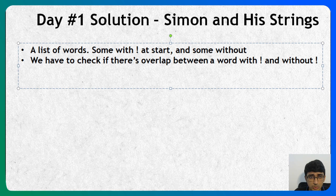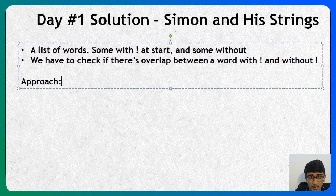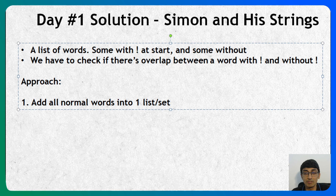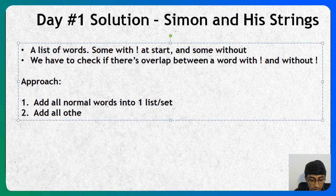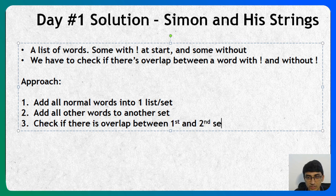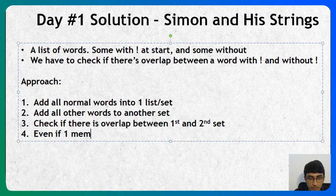The approach I'll take: add all normal words into a set — why a set? Because with a set it's very easy to look up whether a word has occurred. With a list you always have to do a linear search from start to end. So we add all normal words to one set, and all exclamation words to another set, then check if there is overlap between the first and second set.